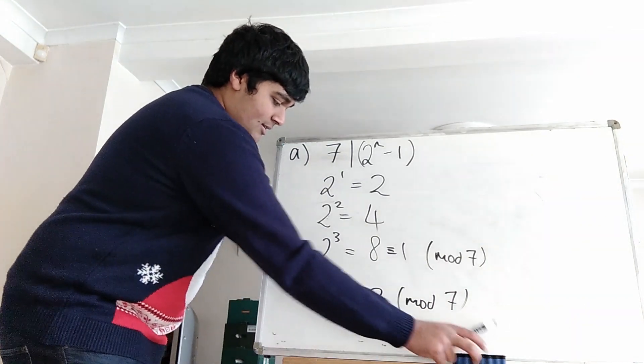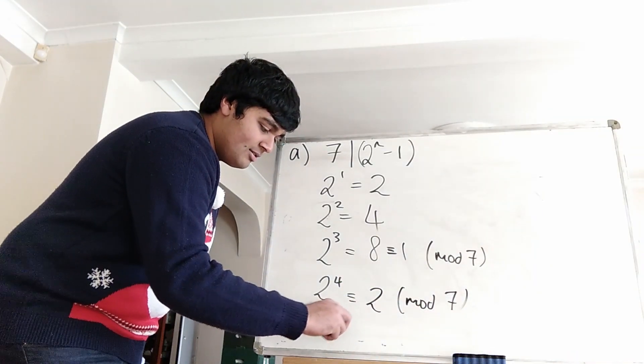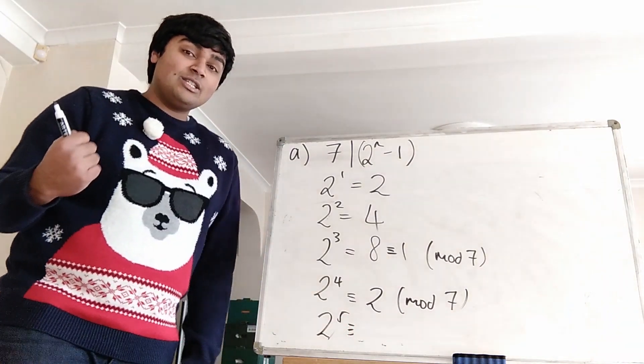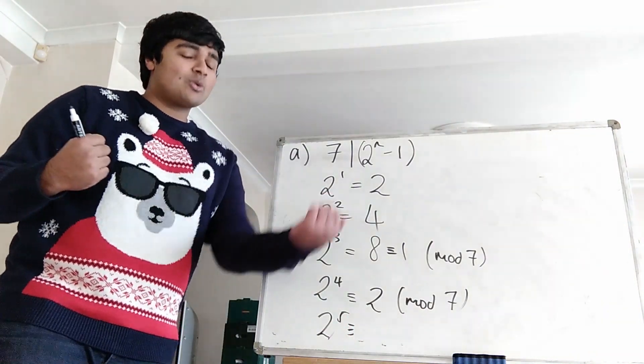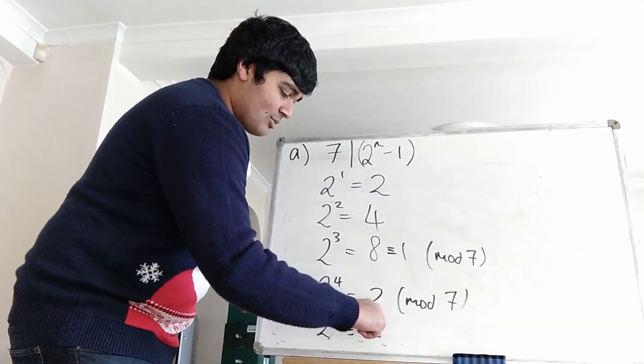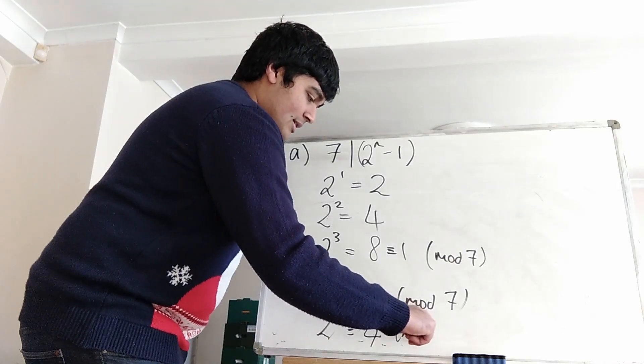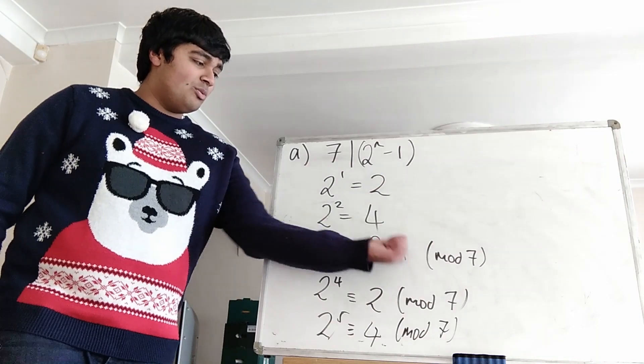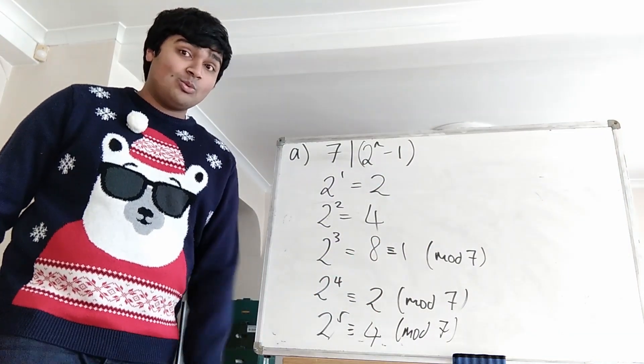And let's just do one more. 2 to the 5 is 32. But of course 32 is 28 plus 4 and 28 is a multiple of 7. So this is congruent to 4 mod 7. Now, hopefully you can spot a pattern. We get 2, 4, 1, 2, 4 and then the next one will also be 1.